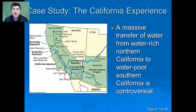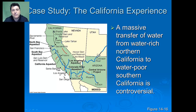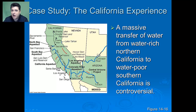As California was continually developed, there was a massive transfer of water from the water-rich north to the water-poor south — always controversial, especially during drought. They constructed a large aqueduct, which allows water to be transferred from north to south. In times of drought, when northern Californians have to conserve water, they ask why — because they have plenty of water but are giving some to the south.